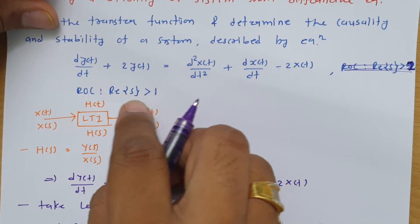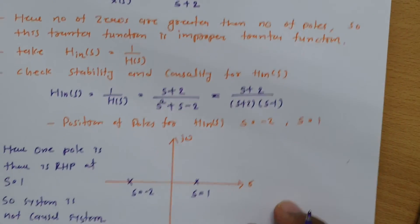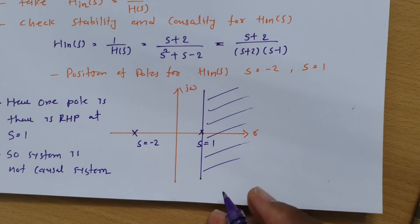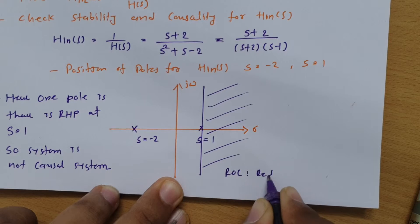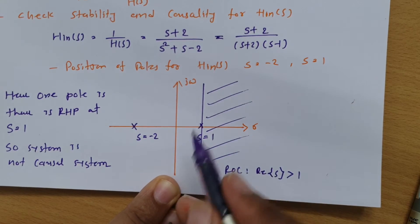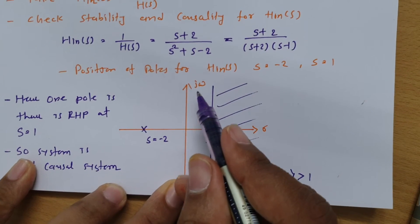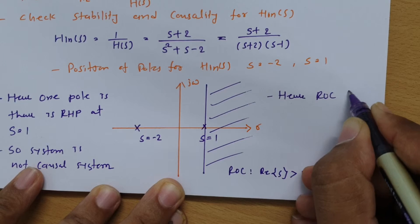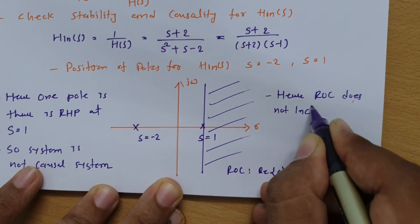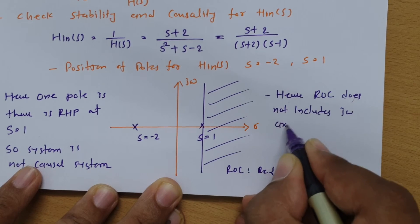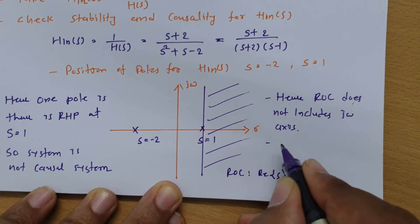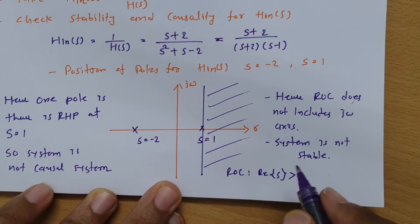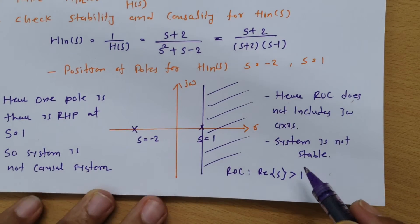From the question, the ROC is given as: real part of s greater than 1. This ROC does not include the jω axis. Since the ROC does not include the jω axis, we can say the system is not stable. So this system is neither causal nor stable, based on the position of poles and the given ROC.